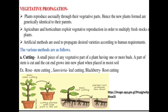Hello friends, today we start with the next point from our topic number one, that is reproduction in lower and higher plants. In the last lecture we studied about the types of asexual reproduction — fragmentation, binary fission, bud formation, and gemma formation — these are the different types of asexual reproduction found in lower plants.